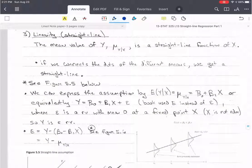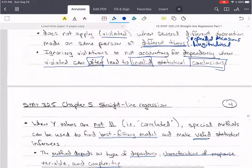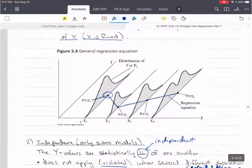So, linearity. This is only for the straight line regression. And it says that the mean value of y, which is mu of y given x, is a straight line function of x. In other words, if we connect the dots on the different means, we get a straight line. So again, in this previous figure, figure 5.4 from the book, you'll see that that is violated. It's not a straight line, it's a zigzag there.